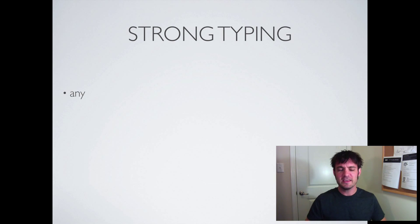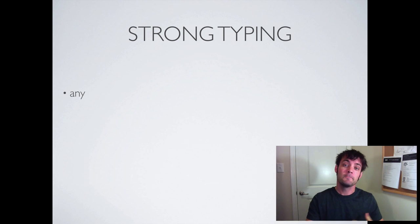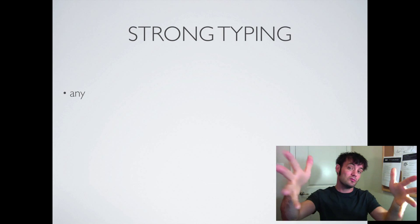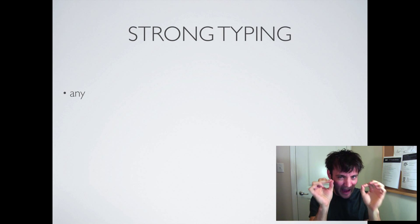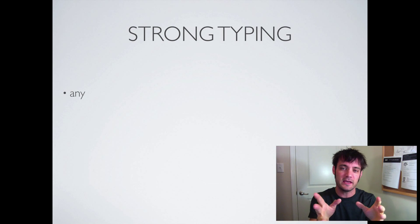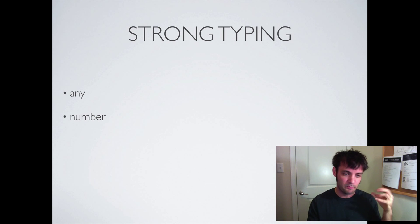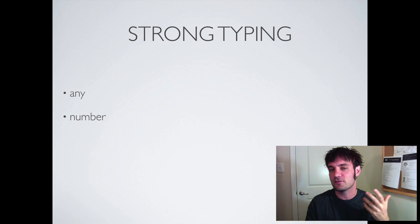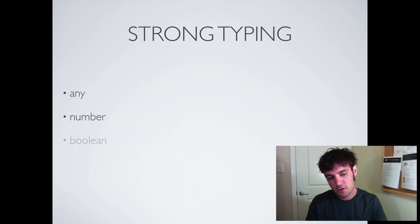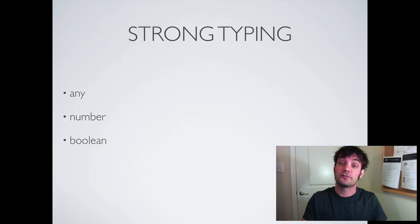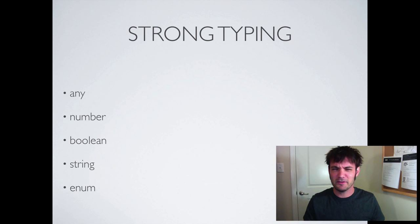Let's talk about strong typing. The types are: 'any' — you can type nothing and it's assumed to be any, but typing 'any' explicitly makes it known when developing APIs. 'number' — there's no int, no float, just number, assumed to be a float. 'boolean' — notice they're all lowercase. And 'string.' There's also 'date' but these are the big ones.